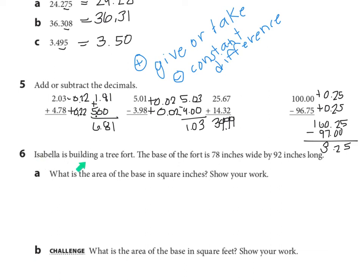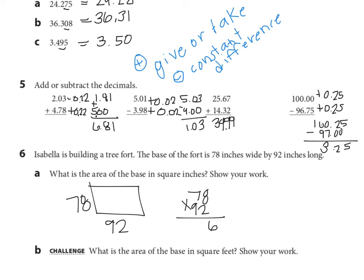Number six says: Isabella is building a tree fort. The base of the fort is seventy-eight inches wide by ninety-two inches long. What is the area of the base in square inches? The area of the base is ninety-two inches by seventy-eight inches, and I'm going to multiply. Using the standard multiplication algorithm: two times eight is sixteen; two plus seven is fourteen plus one is fifteen; nine times eight is seventy-two; nine times seven is sixty-three plus seven is seventy. Adding the two partial products, the area is seven thousand one hundred seventy-six square inches.